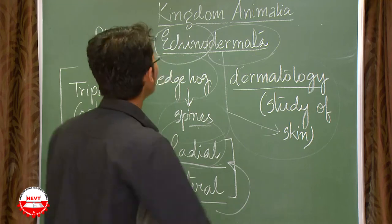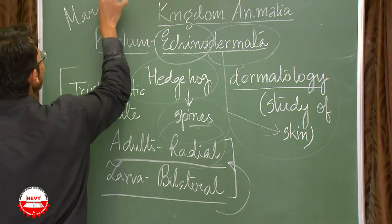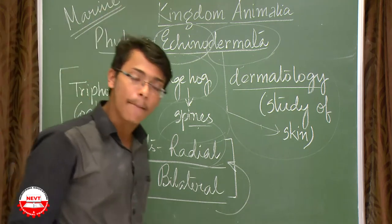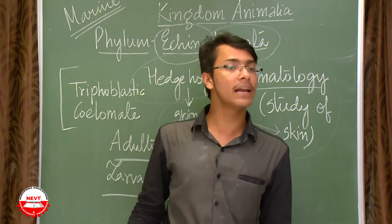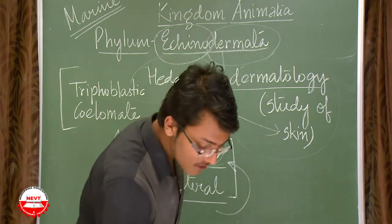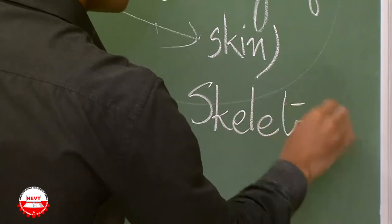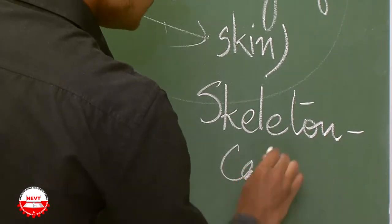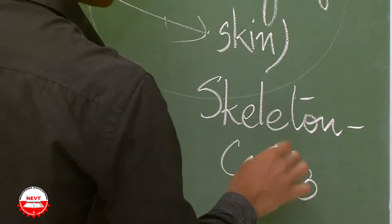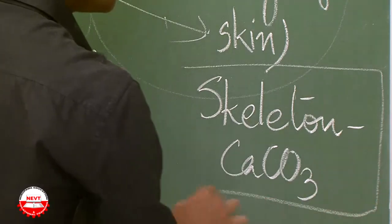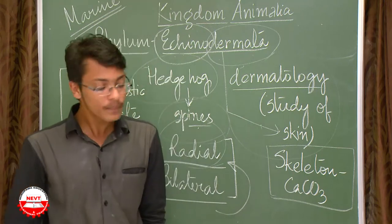Regarding habitat, Echinoderms are mainly marine — they take up water as their habitat. The next point is their skeleton: the body is covered with a hard skeleton made up of CaCO₃, that is calcium carbonate.